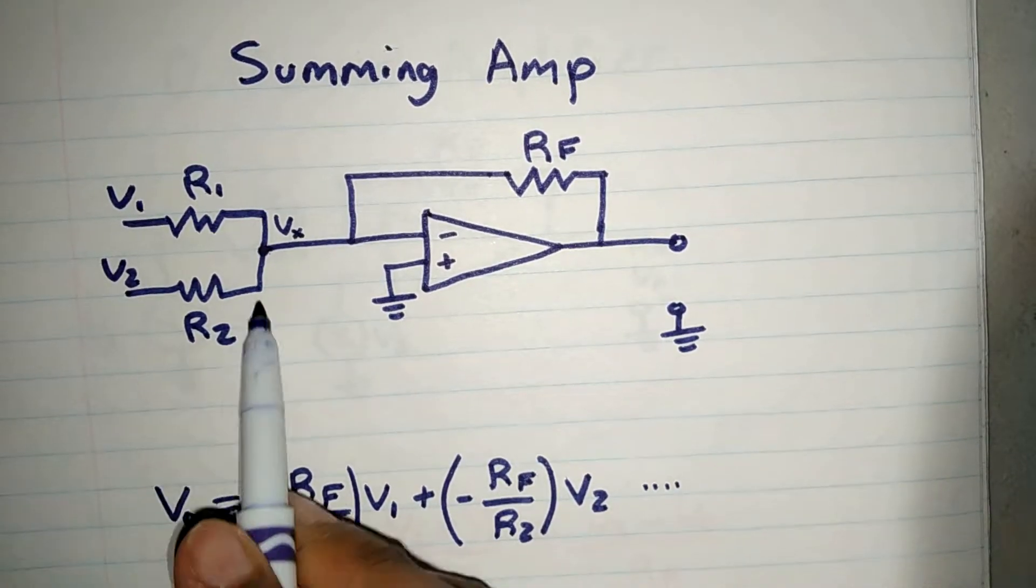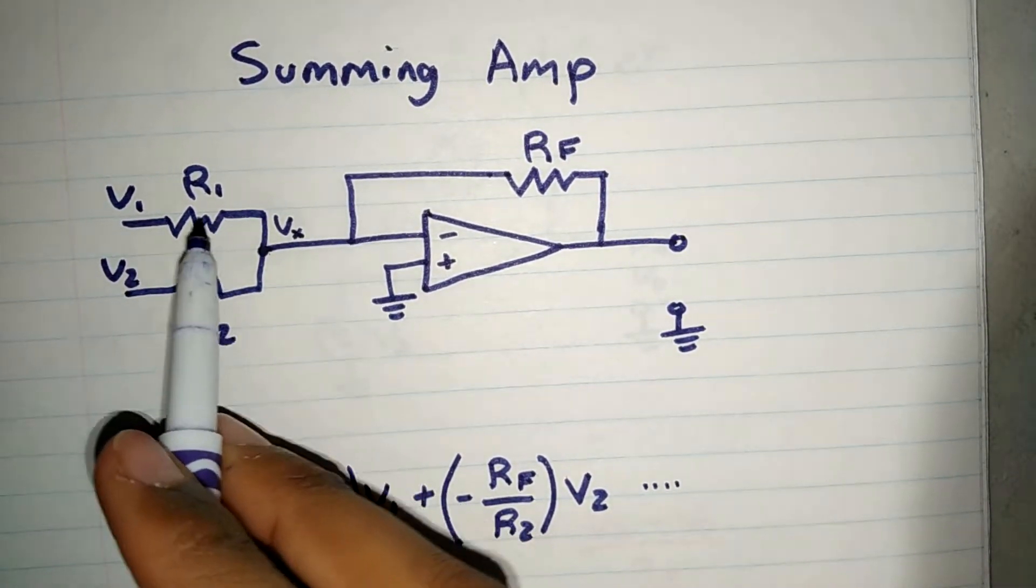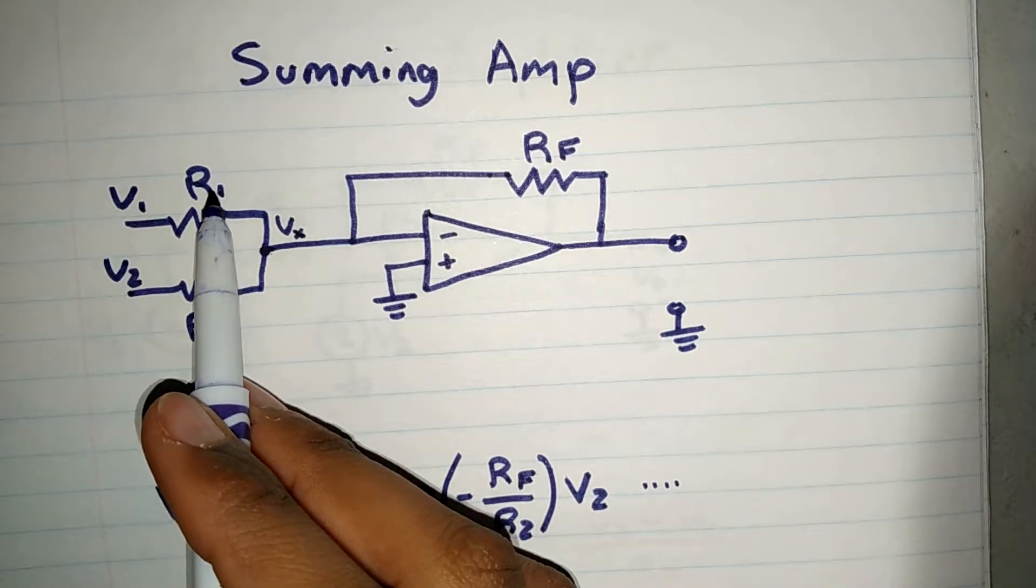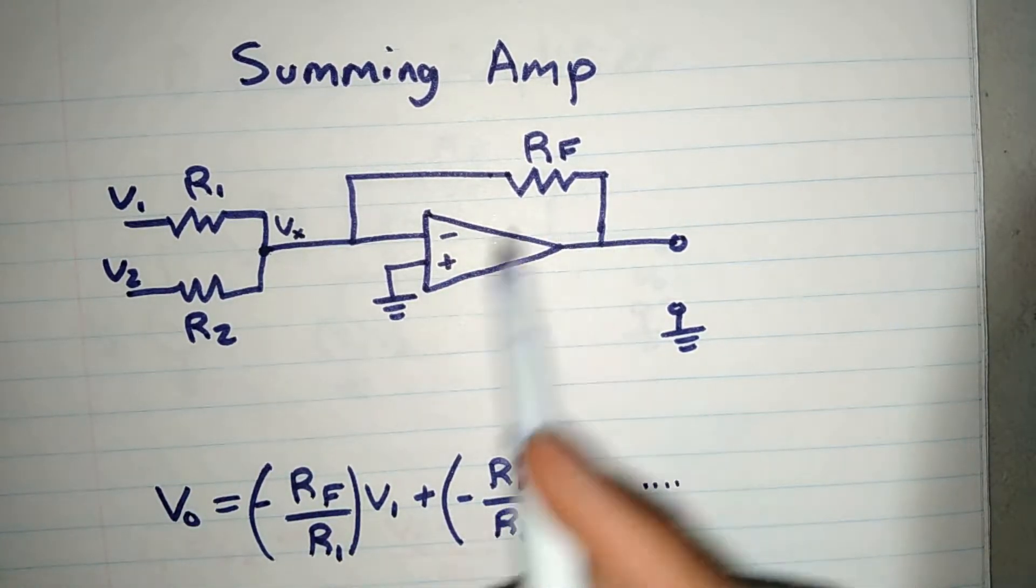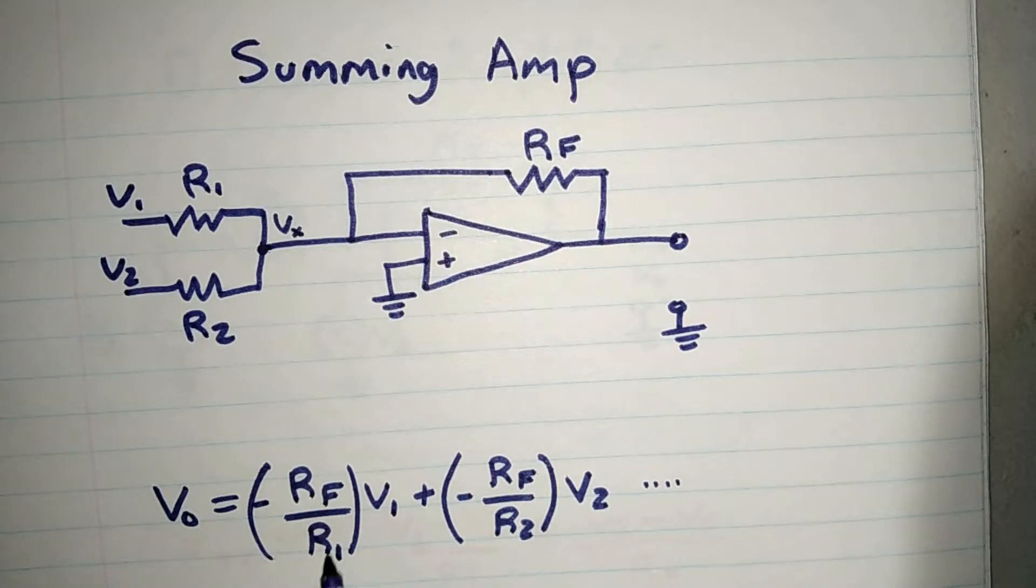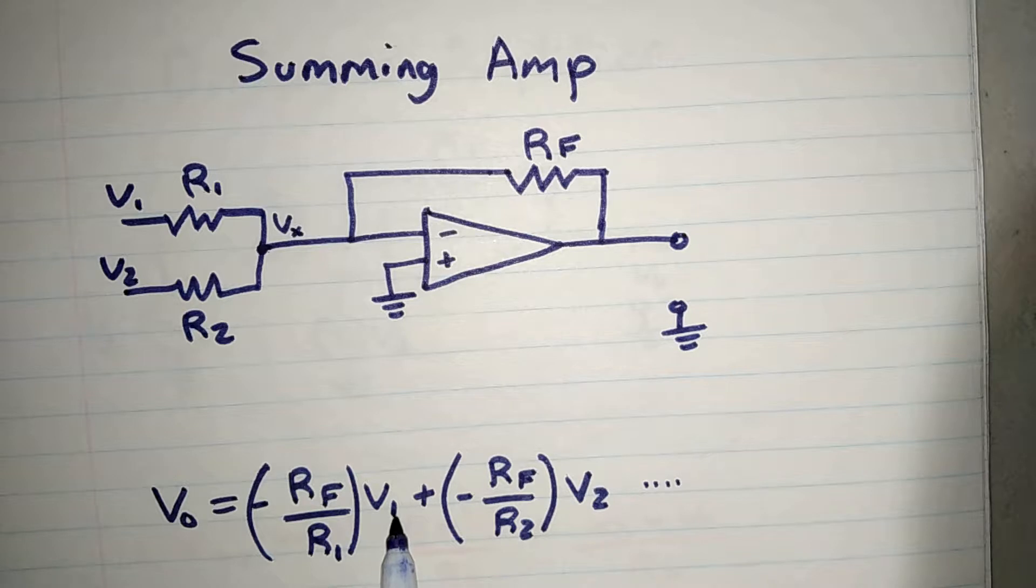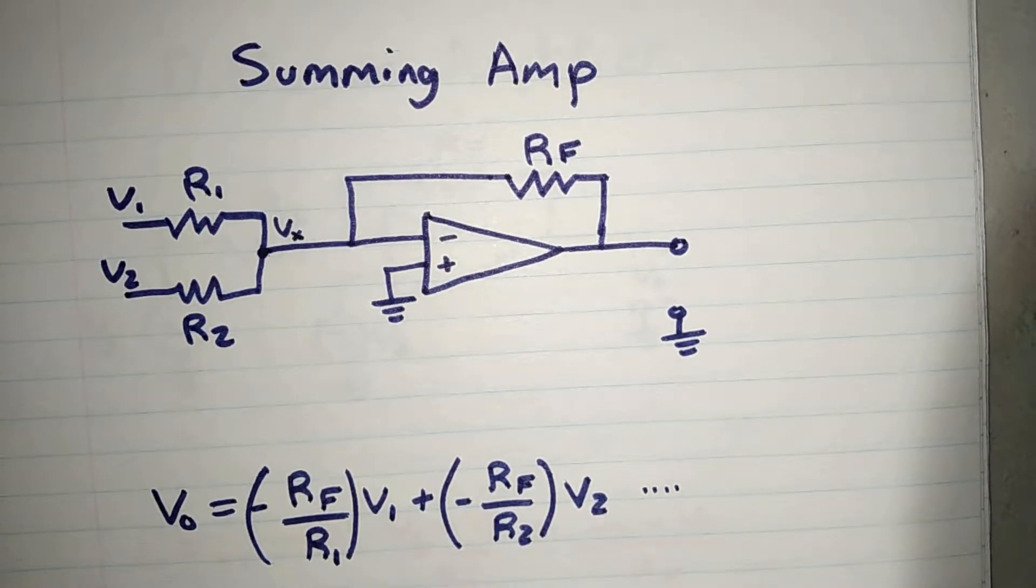If V2 did not exist, then this would have been what we call the input resistance. And so it would be defined simply as negative RF over RI VS. But in this case, that is not the case.